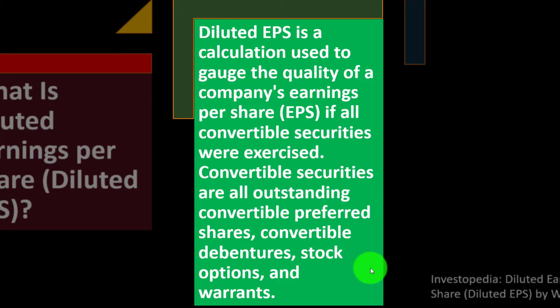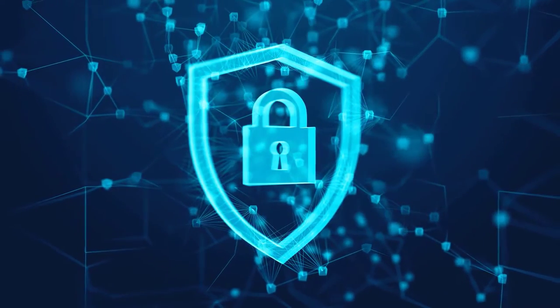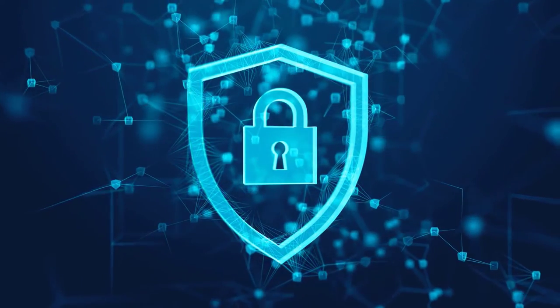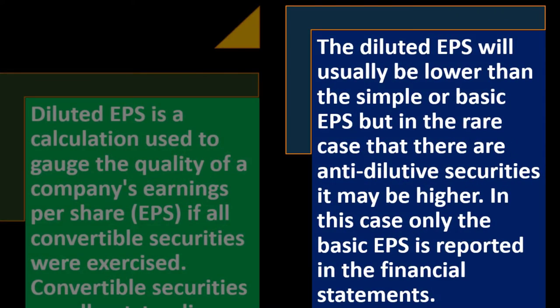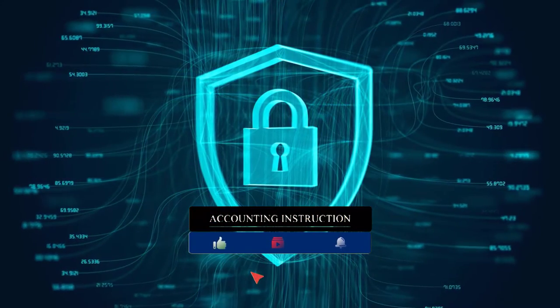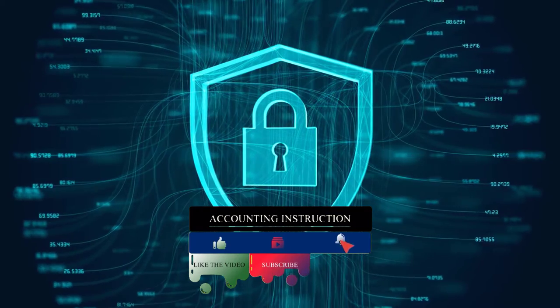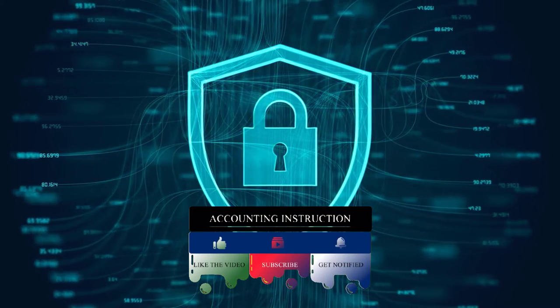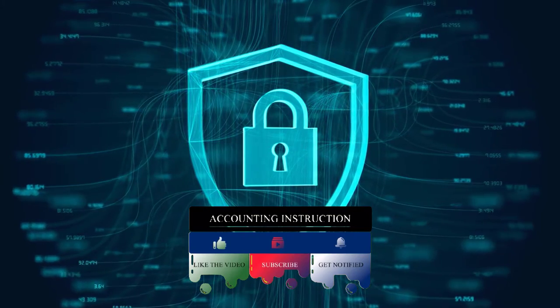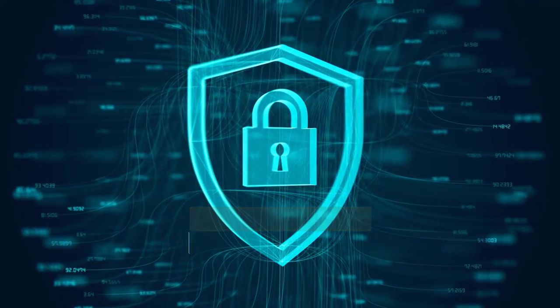Convertible securities include all outstanding convertible preferred shares, convertible debentures, stock options, and warrants — securities with a convertible component that could result in more common shares. The diluted EPS will usually be lower than the basic EPS, but in the rare case of anti-dilutive securities, it may be higher, meaning fewer shares outstanding. In that rare case, only the basic earnings per share is reported in the financial statements.